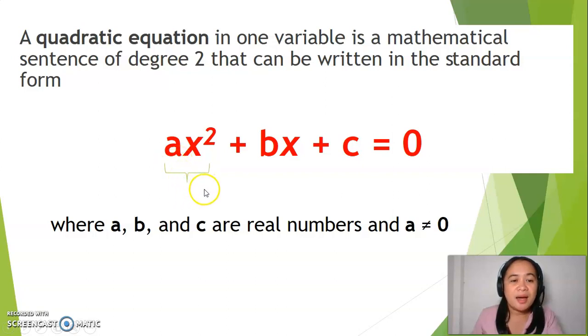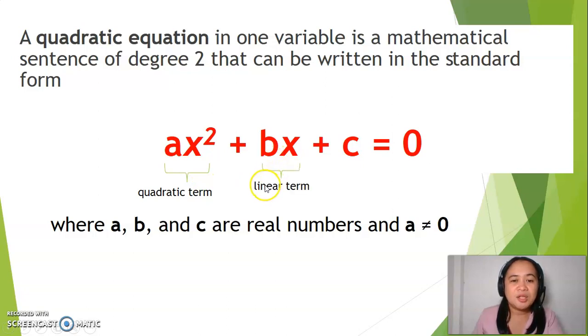ax squared is considered as the quadratic term, bx is considered as the linear term, while c is considered as the constant term.